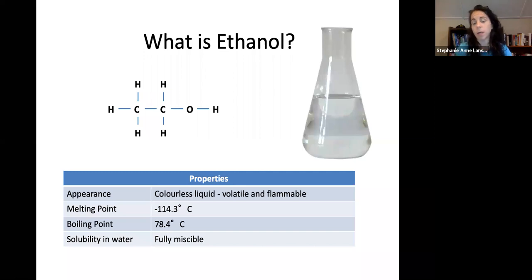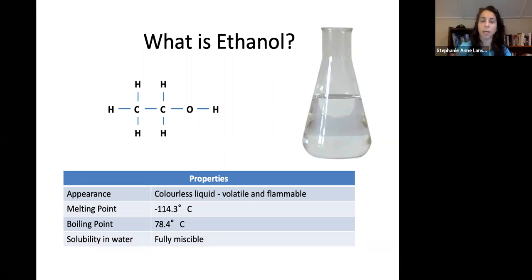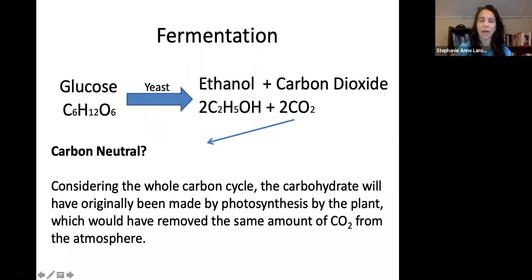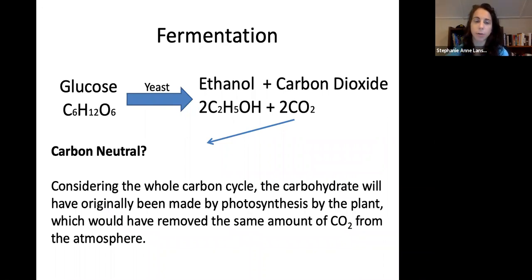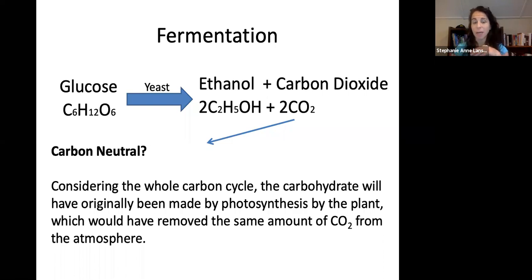So what is ethanol? Ethanol is a colorless liquid — it's volatile and flammable, with a lower boiling point of about 78.4°C, and it's fully miscible and soluble in water. For corn-based ethanol, we take our glucose and add yeast in a biological process. We get ethanol and CO2 as products.